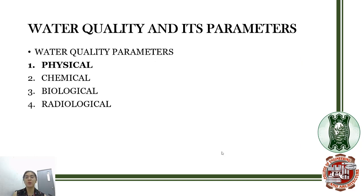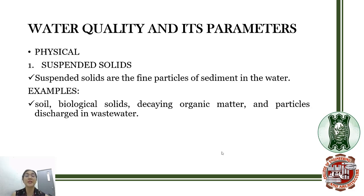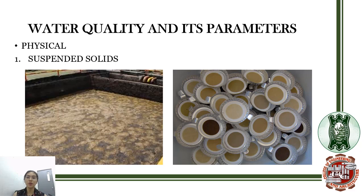These are the water quality parameters: physical, chemical, biological, and radiological. For the physical category, the first parameter is suspended solids — fine particles of sediment in the water. After sedimentation, the particles that settle at the bottom are your suspended solids. Examples include soil, biological solids, decaying organic matter, and particles discharged in wastewater. If you take wastewater, dry it, and observe what remains at the bottom of the pan, that is your suspended solids.